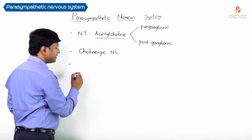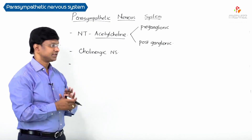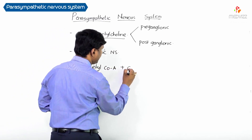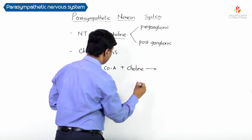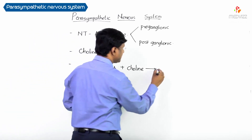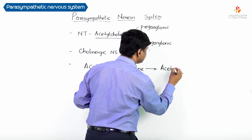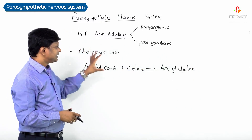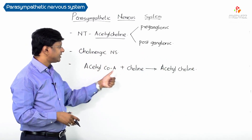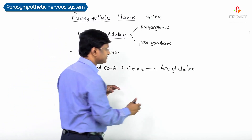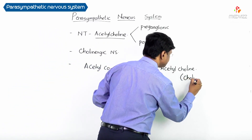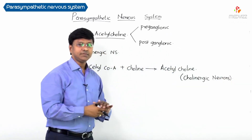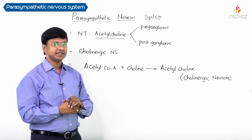Acetylcholine is synthesized from two substances: acetyl combines with choline to result in the formation of acetylcholine. The acetylcholine formed is then stored in the cholinergic neurons.